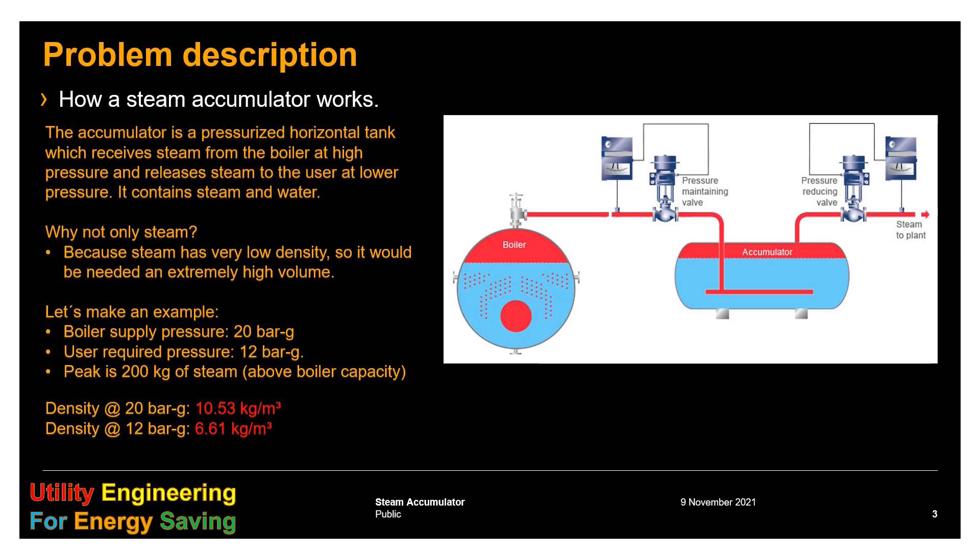We need to consider the difference in density between the two pressures, that is 3.92 kg per cubic meter. Therefore, if we have an excess of 200 kg, the required volume is 200 divided by this difference in density, which is 51 cubic meters. The accumulator size is really giant.